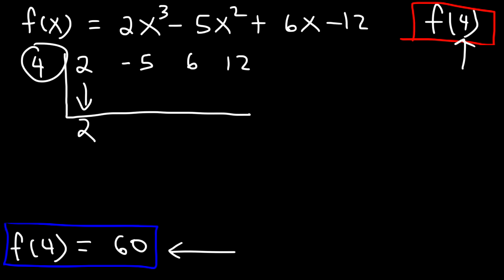So first, we're going to multiply. 4 times 2 is 8. And then we're going to add. Negative 5 plus 8 is 3. And then multiply. 4 times 3 is 12. And then add. 6 plus 12 is 18. And then 4 times 18.